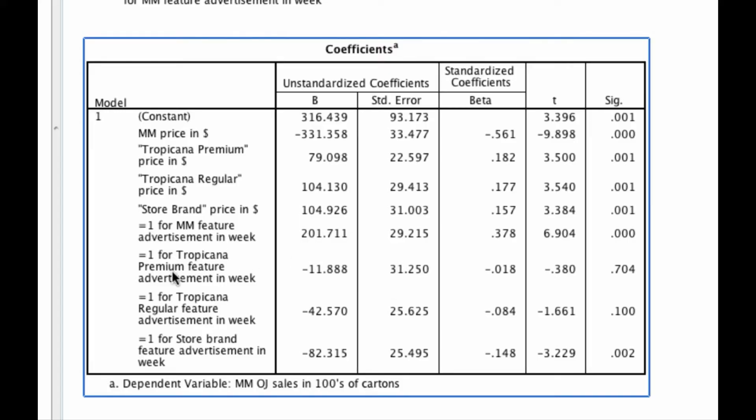So for instance, when Tropicana Premium advertises, it actually has no meaningful influence on my sales, which is indicated by this significance factor being above .05. There's a slight influence of Tropicana regular advertising on my own sales. And there seems to be a pretty strong influence of the store brand advertising on my sales, such that when the store brand advertises, I expect to lose 82 units of sales.